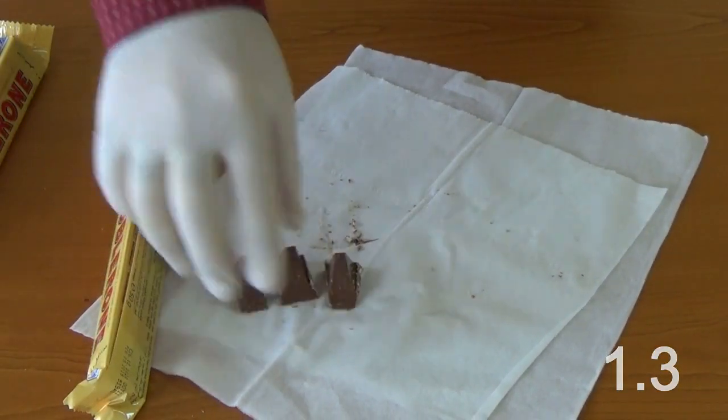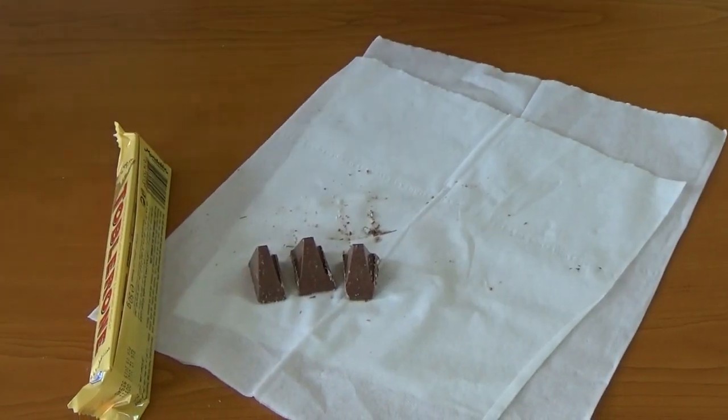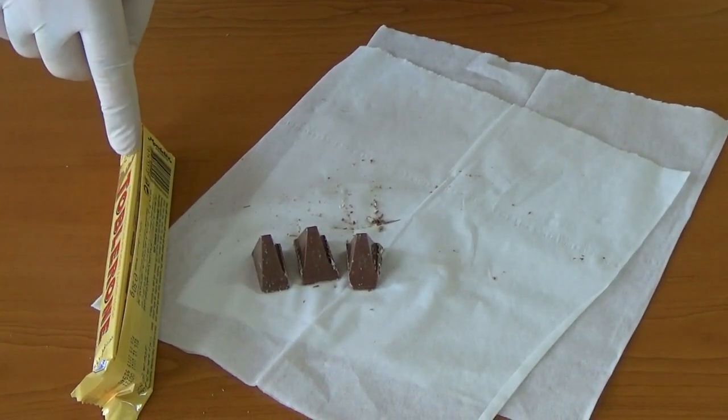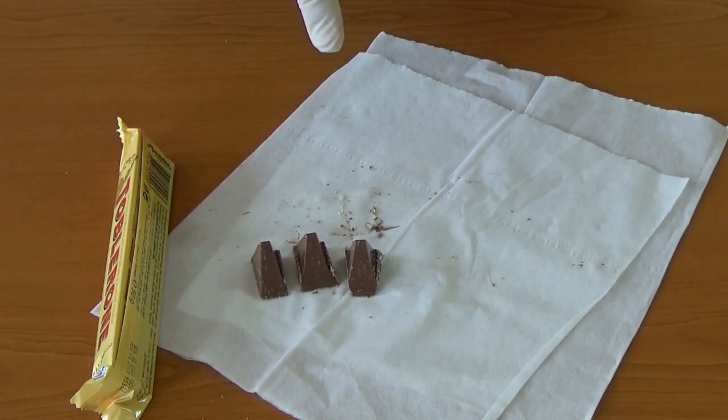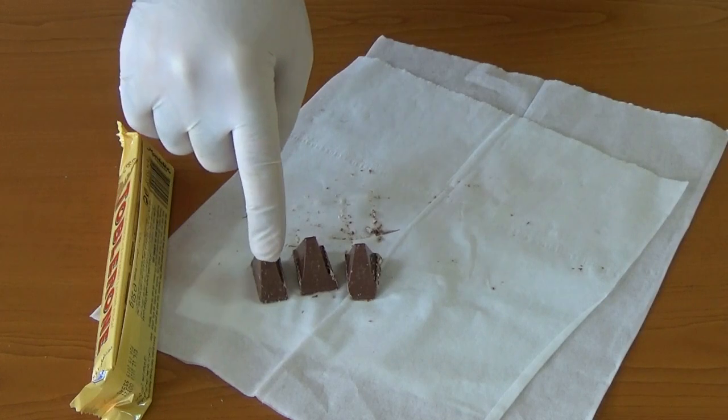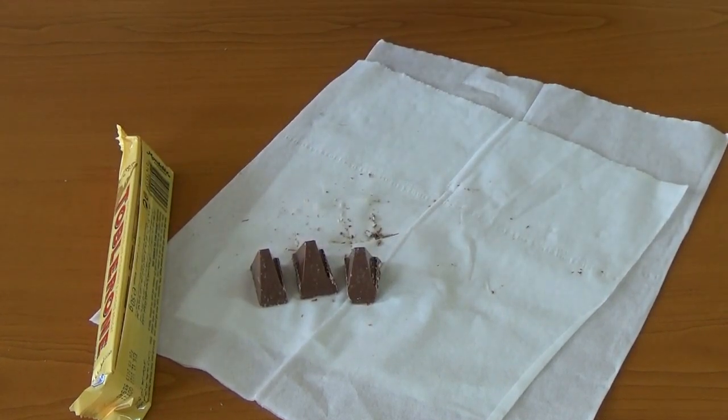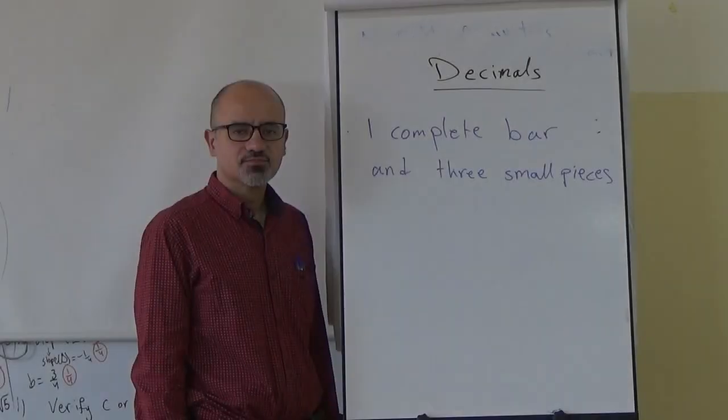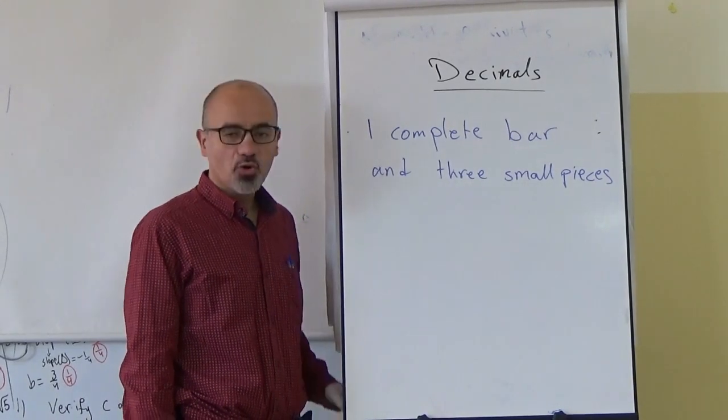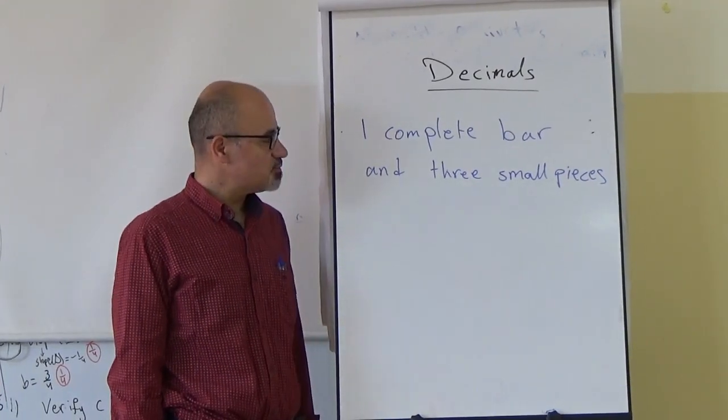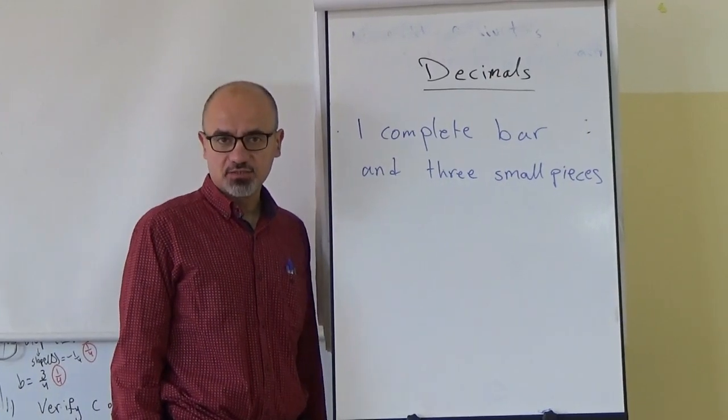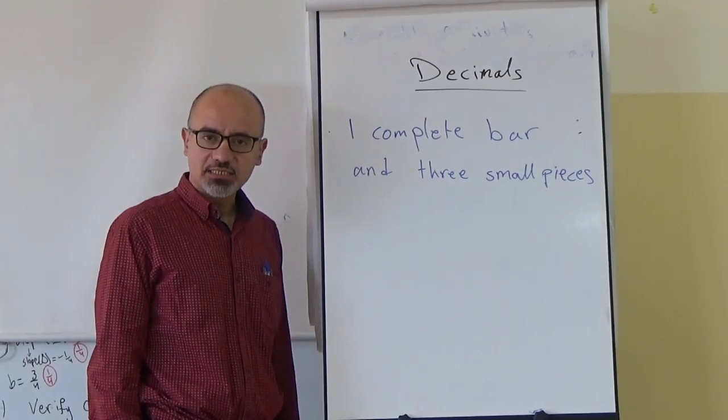So it is 1.3, or let me put it in another way: this is one complete chocolate bar and these are three tenths. The corresponding decimal is 1.3.